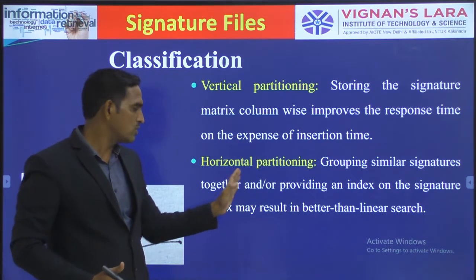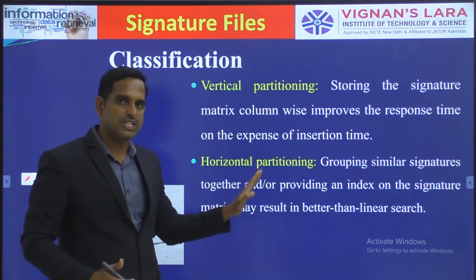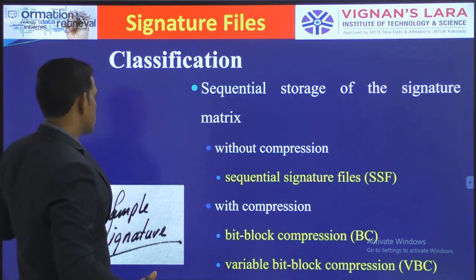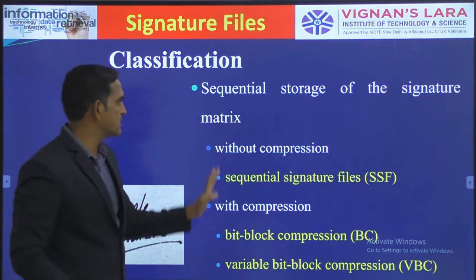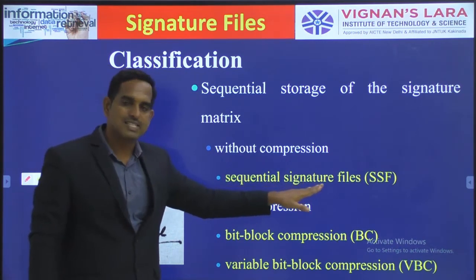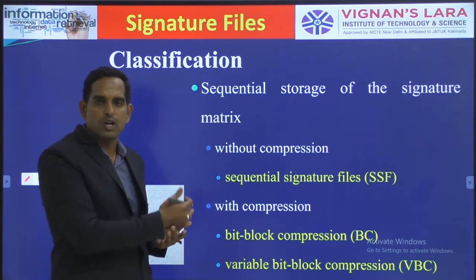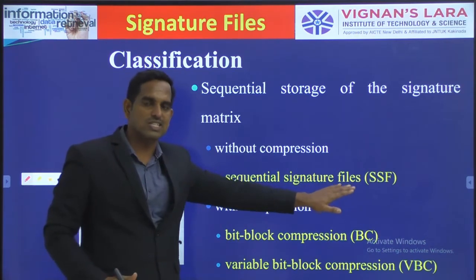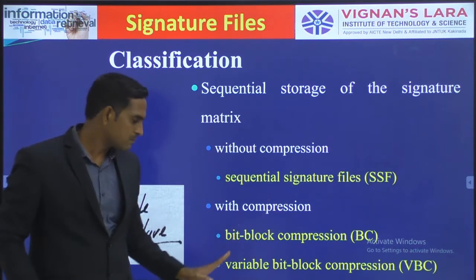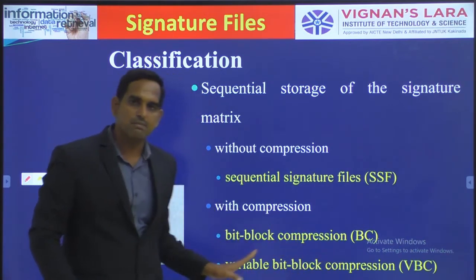In horizontal partitioning, similar signatures are grouped together and an index is provided on those signature groups, resulting in better search than a sequential scan. Both vertical and horizontal partitioning give faster search but slower insertions. The classification includes: basic sequential signature file without compression, and with compression: fixed bit block compression (BC) and variable bit block compression.